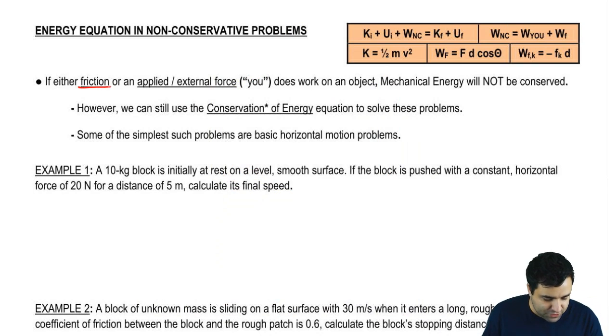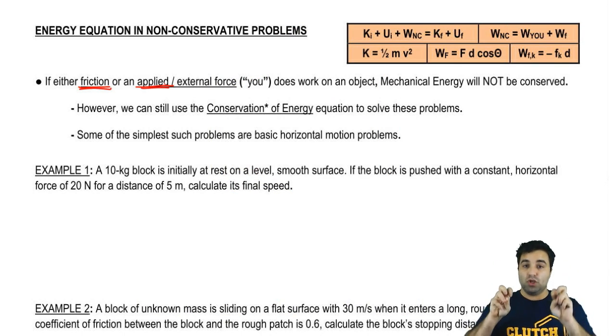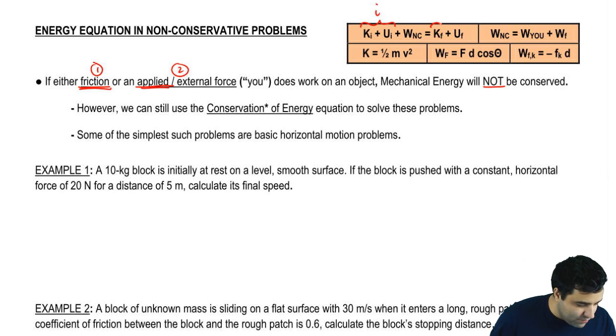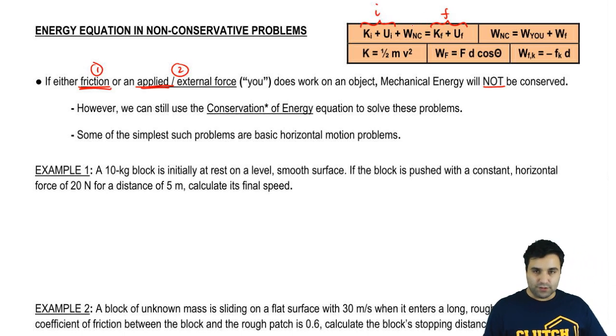If either friction or an applied external force does work on an object, mechanical energy will not be conserved. You can see this from the conservation of energy equation - this is initial mechanical energy, this is final mechanical energy. If work by non-conservative forces is zero, the energies are the same. But if this is not zero, then the energies will be different.